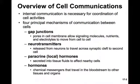Internal communication is necessary for the coordination of all the cell activities in our body. There are four principal mechanisms of communication between different cells. First, there are gap junctions. Gap junctions are pores in the cell membrane that allow signaling molecules, nutrients, and electrolytes to move from one cell to the other, literally directly through the cytoplasm between cells.